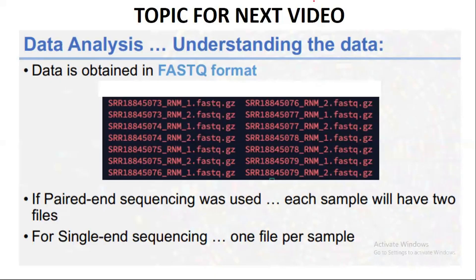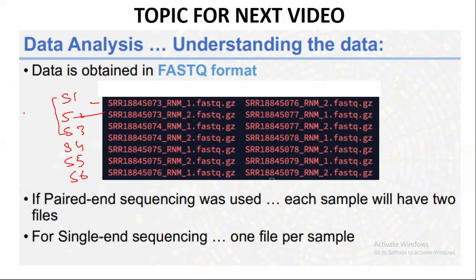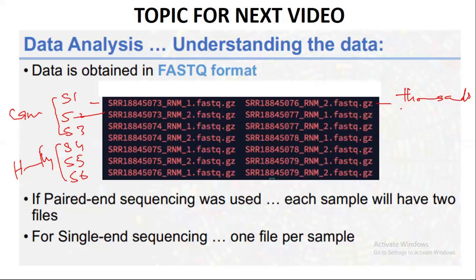These files are generated for all samples. For example, sample one through six — where samples one to three are from cancer patients and samples four to six are from healthy patients. Inside each file, thousands of thousands of nucleotide sequences are present, generated from the fluorescence lights captured during sequencing.